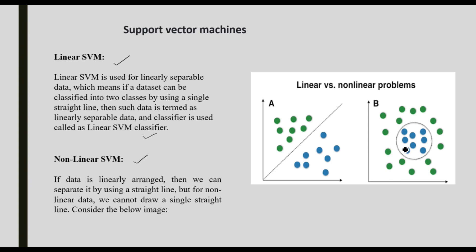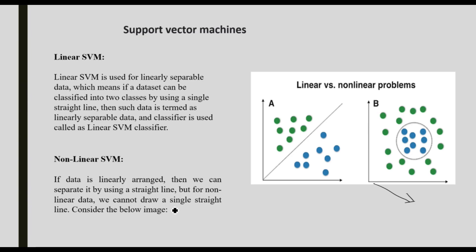Non-linear SVM: if the data is linearly arranged, then we can separate it by using a straight line. But if the data is non-linearly arranged, we cannot separate it by using a straight line. For non-linear data, we can use a 3D level hyperplane to cut and separate the classes.